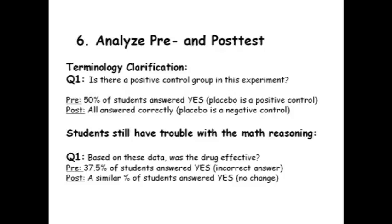So I think that at least clarified the terminology confusion for question one. The second part of question one asks: based on this data, was the drug effective? 37.5% of the students said yes, which is the wrong answer. And in the post-test, a very similar percent of students answered yes — so there's virtually no change. Which is actually nice as a kind of control for our study, because we did not specifically teach or try to help students with that mathematical reasoning.